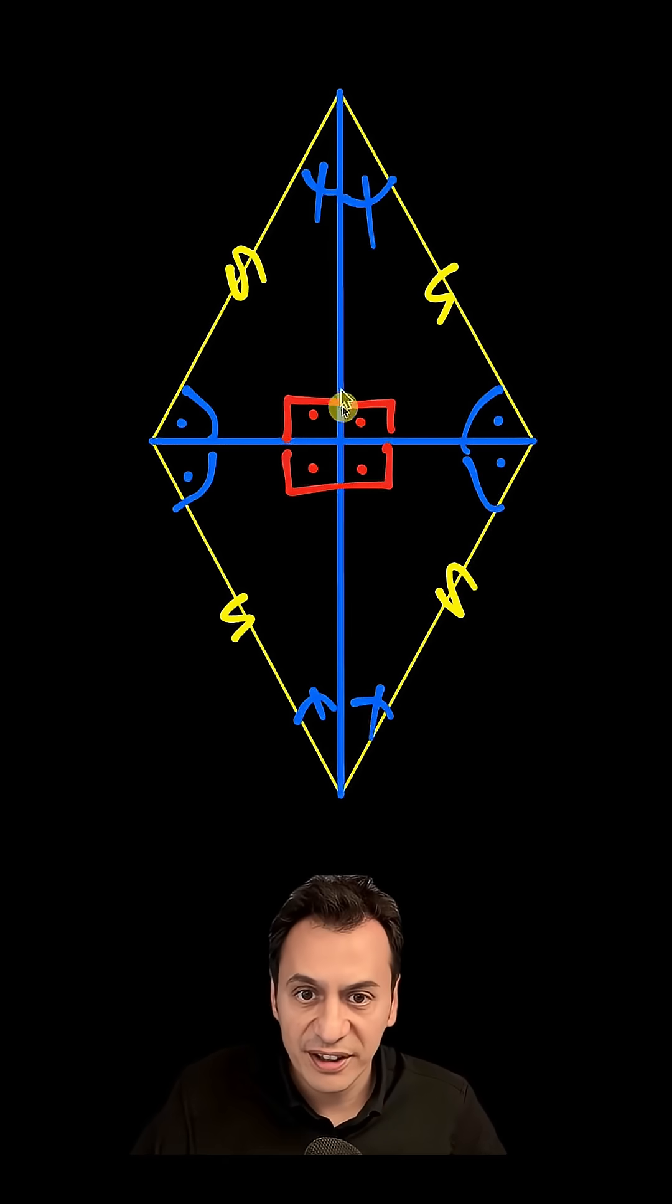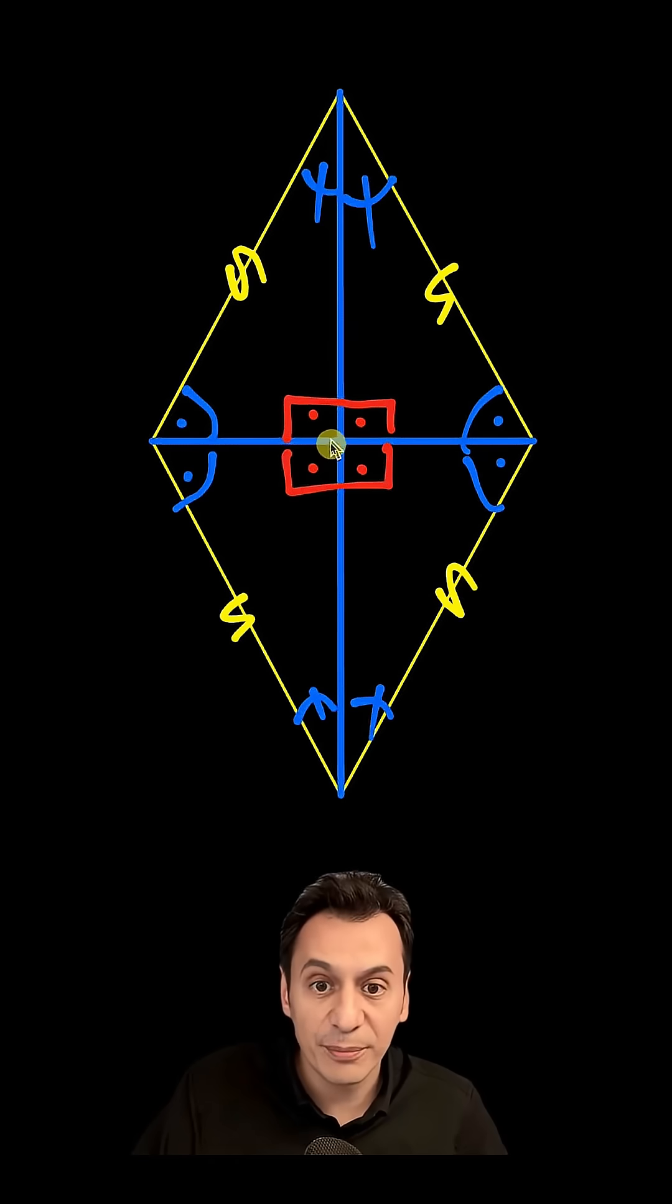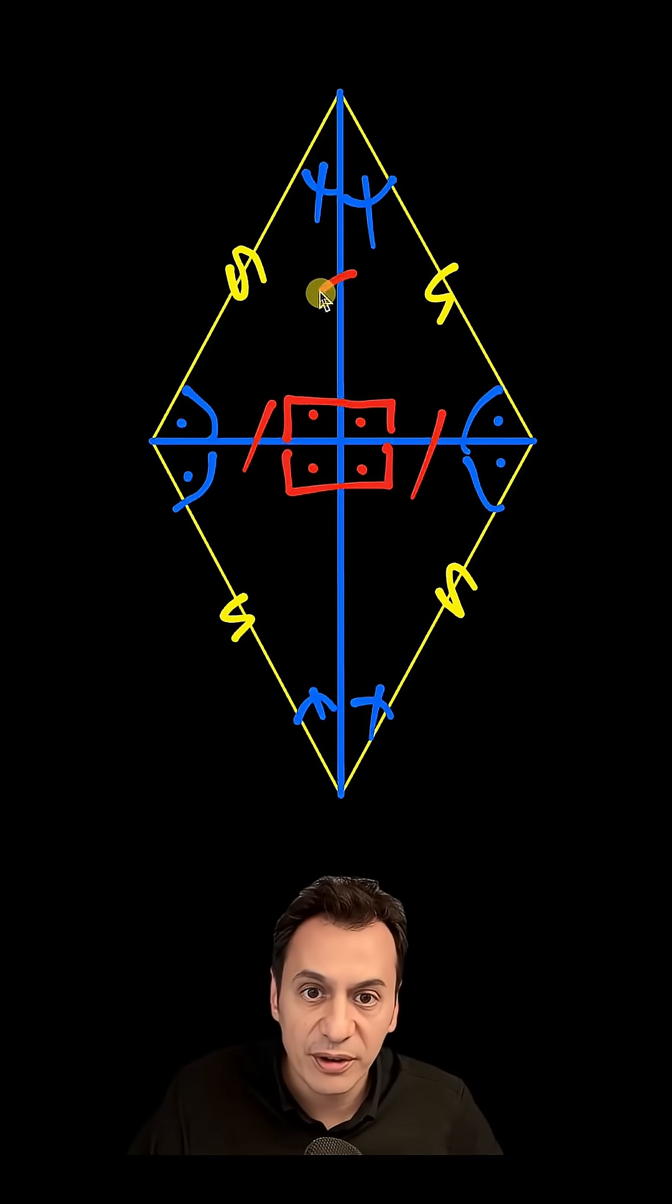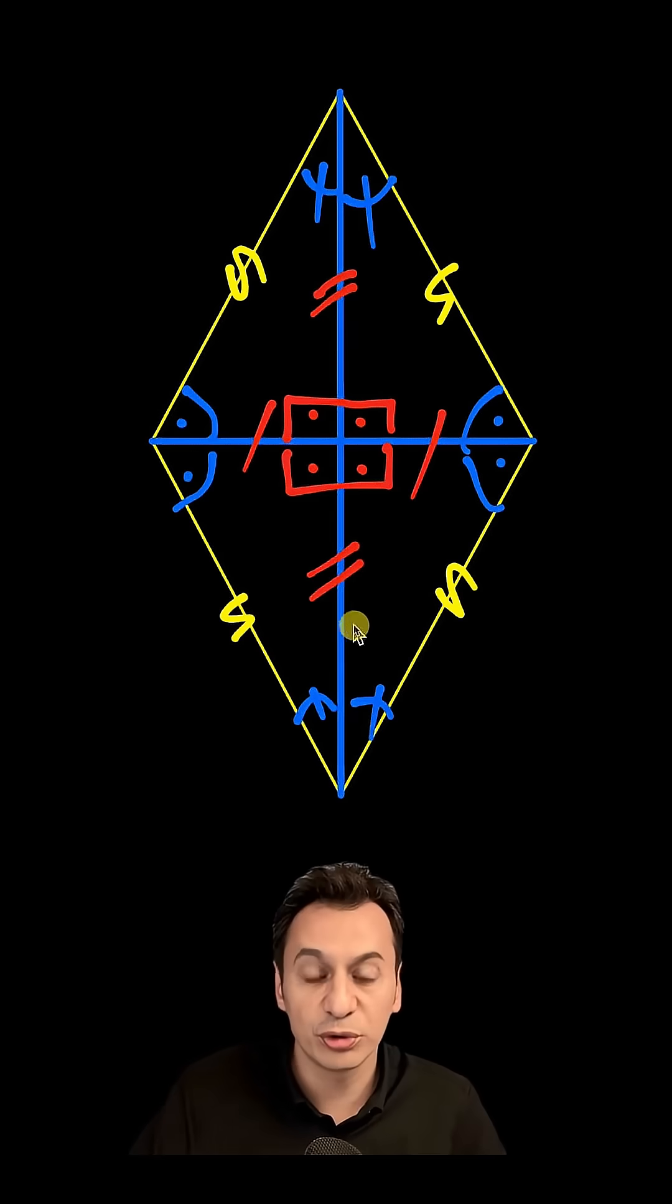Now, when you draw an angle bisector in an isosceles triangle, it is also a perpendicular and at the same time a median. Therefore, this line segment and this line segment are equal to each other. And if you look at this triangle, when I drop this perpendicular, this line segment and this line segment will also be equal to each other.